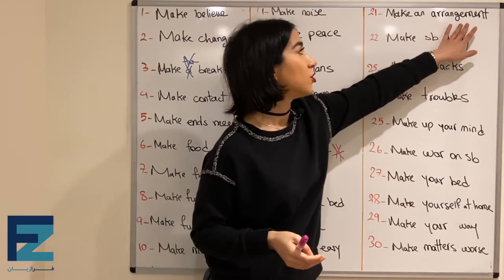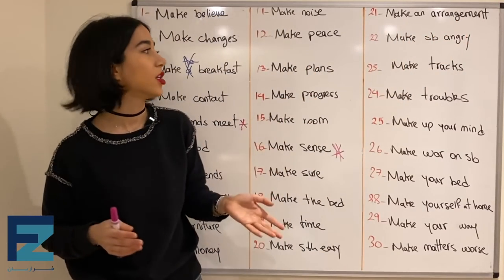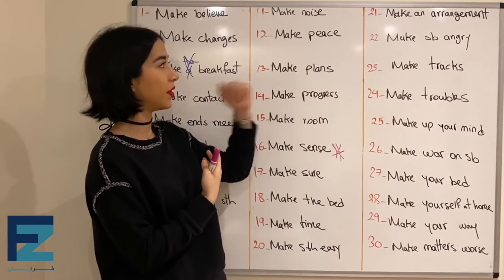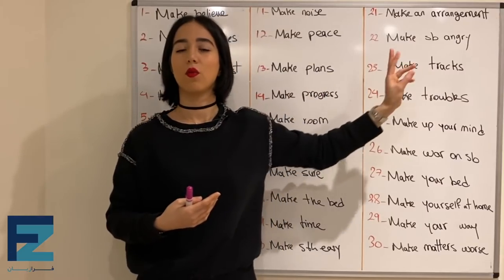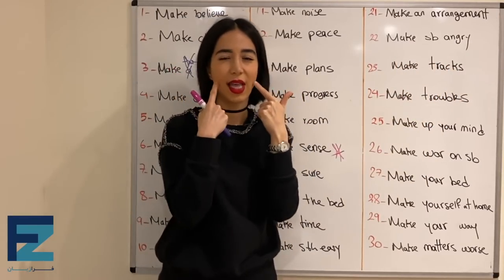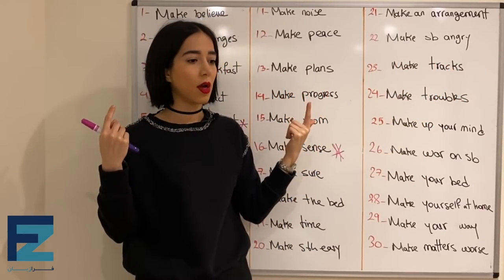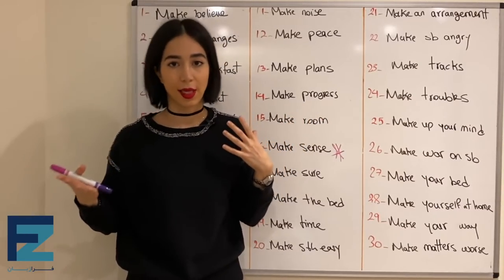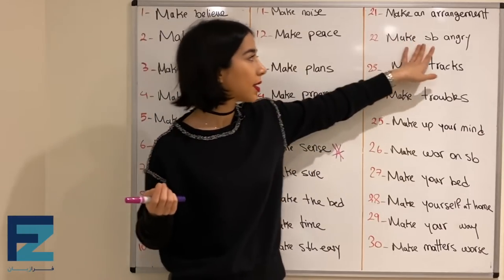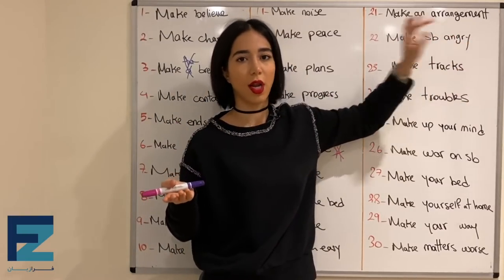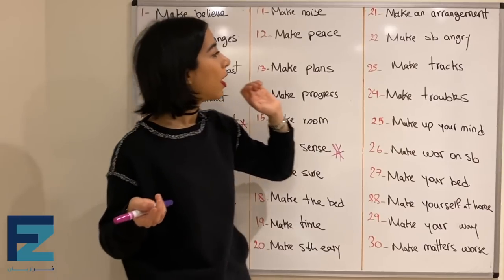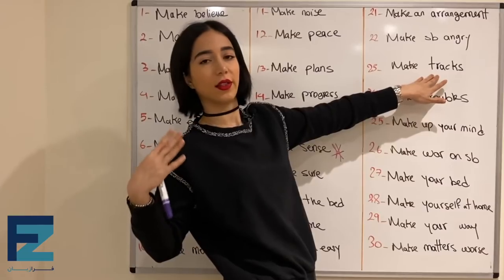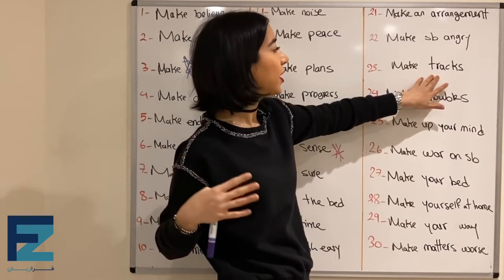Number twenty-one: make an arrangement — means to arrange something, to plan something, یه چیزی رو برنامه‌ریزی کردن. Make someone angry, make someone happy, make someone sad, make someone irritated — یکی رو خوشحال کردن، عصبانی کردن، ناراحت کردن. Make someone + adjective.